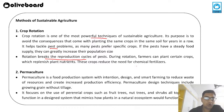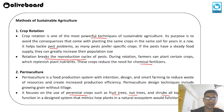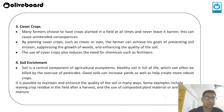The second method is permaculture — a food production system with intentional design and smart farming to reduce soil wastage and create increased production efficiency. Permaculture design techniques include growing grain without delay, and the main focus is on the use of perennial crops such as fruit trees, nut trees, and shrubs working together in a designed system that mimics how plants in a natural ecosystem would function.